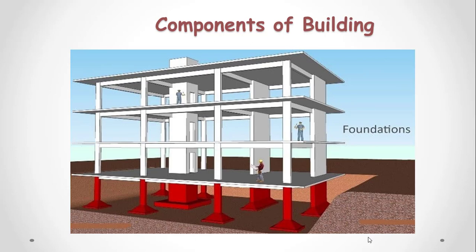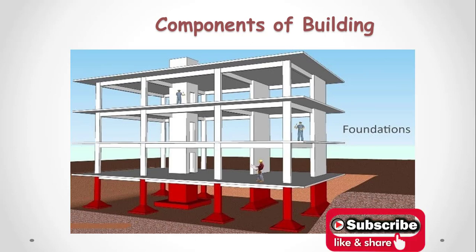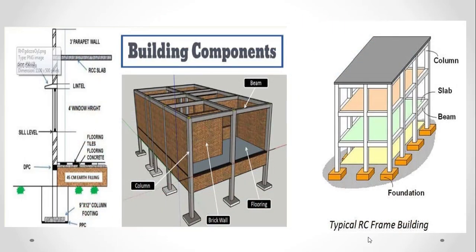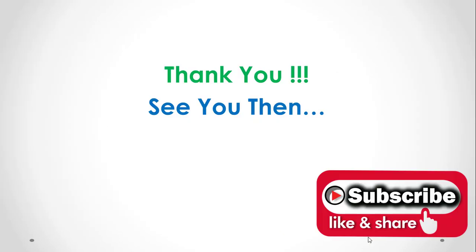Now let's look at the components of buildings. Buildings have two major components: superstructure and substructure. The substructure is the lower portion of the building, usually located below ground level — the best example is the foundation. The superstructure is the part of the structure above ground level, such as walls, roofs, columns, and slabs. Thank you very much.